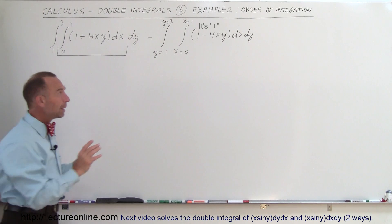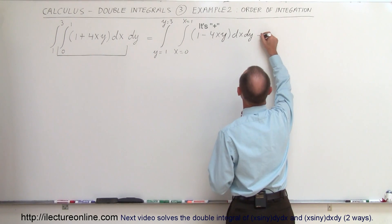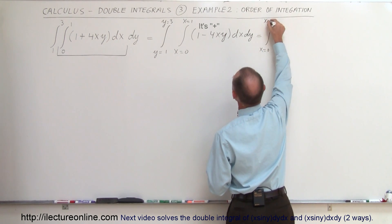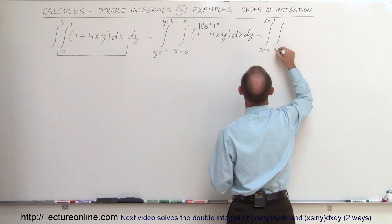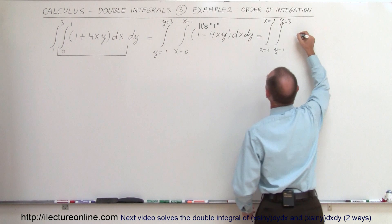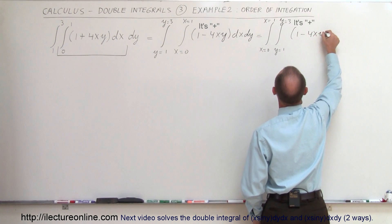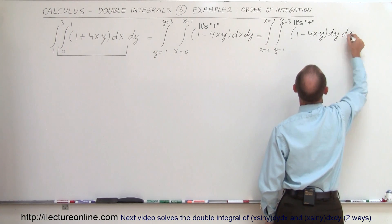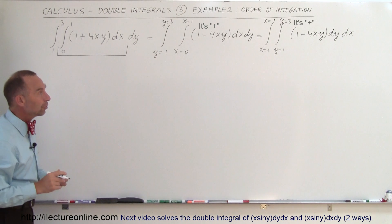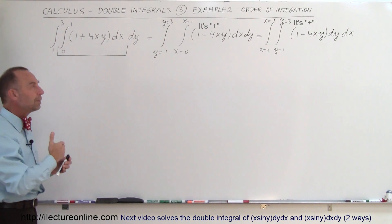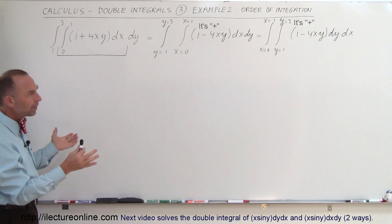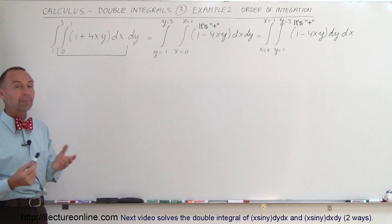We should also be able to reverse the order of integration: the integral from x equals 0 to x equals 1, then the integral from y equals 1 to y equals 3, of 1 minus 4xy dy dx — and we should get the same answer. Not always is that a wise thing to do, since in some cases one method will be easier to integrate than the other, so there's a preferred way to go about it.